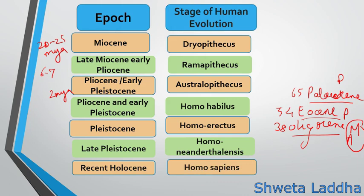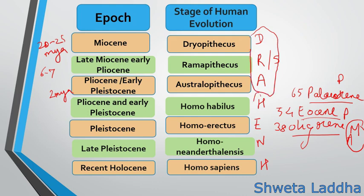How to remember these names? It is very simple. Always remember: Dryopithecus was first, then Ramapithecus — also called Shivapithecus — then Australopithecus, which is considered the connecting link. Then came Homo habilis, Homo erectus, Neanderthalensis, and Homo sapiens. If you develop an acronym like 'DRA-HEN' plus Homo sapiens, it becomes very easy to remember.